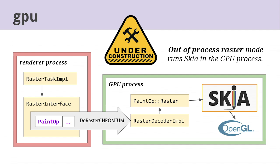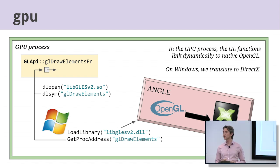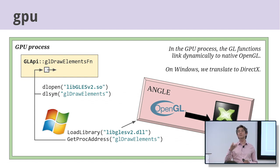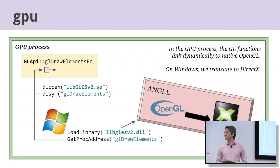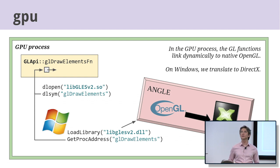On most platforms, the GL pointers inside the GPU process are real OpenGL, initialized by dynamic lookup from the system's shared OpenGL library. On Windows, there's yet another indirection where they come from a library we provide called ANGLE, whose job is to translate OpenGL to DirectX — Microsoft's API for accelerated graphics on Windows. There are also native OpenGL drivers for Windows, but apparently they aren't good enough.